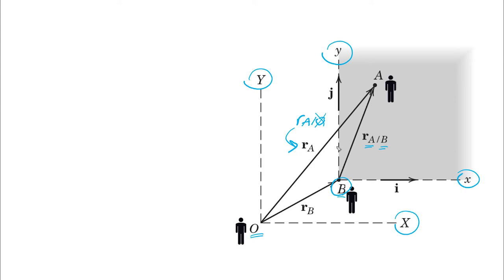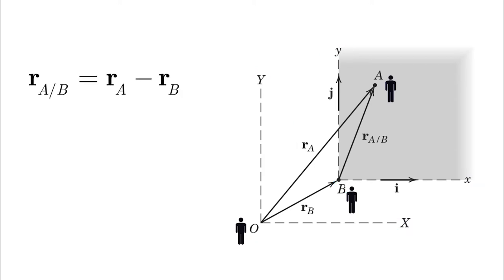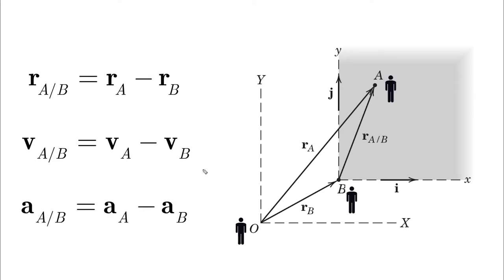The definition of RA relative to B is RA minus RB. Taking the derivative, we get the velocity of A relative to B, which is VA minus VB. One more derivative gives us the acceleration of A relative to B, which is AA minus AB. Notice one important thing: A relative to B means A minus B — whatever is mentioned first comes first, minus the second.